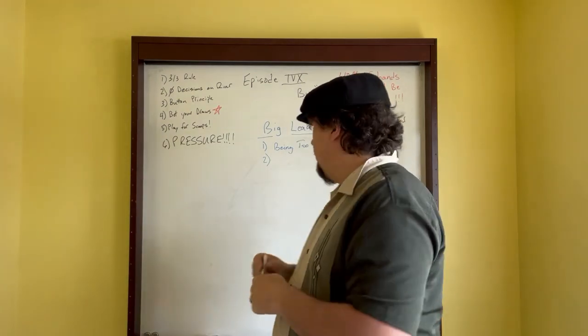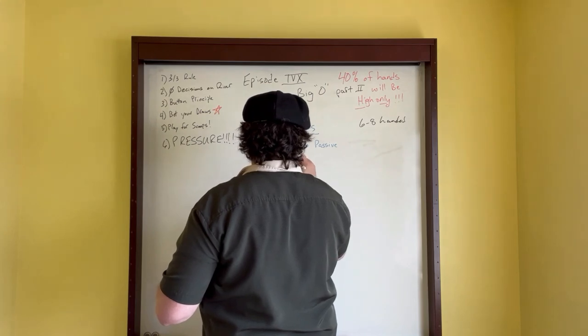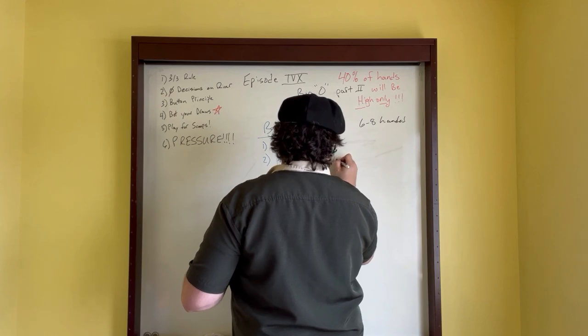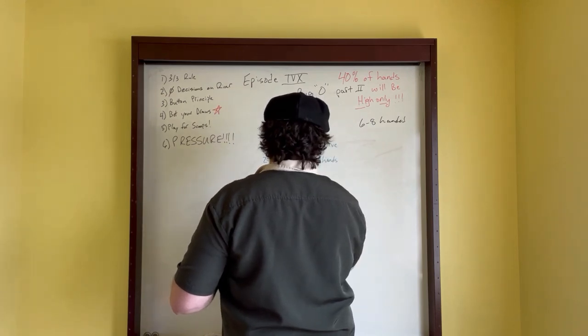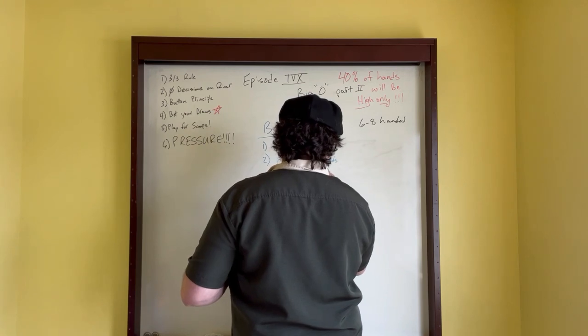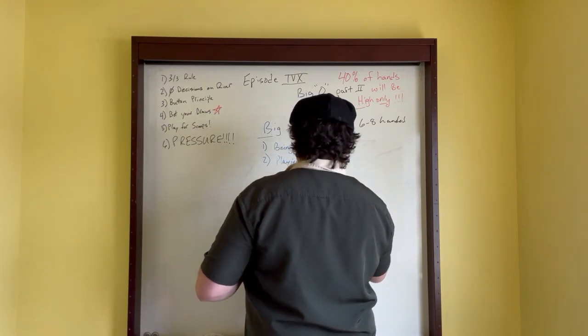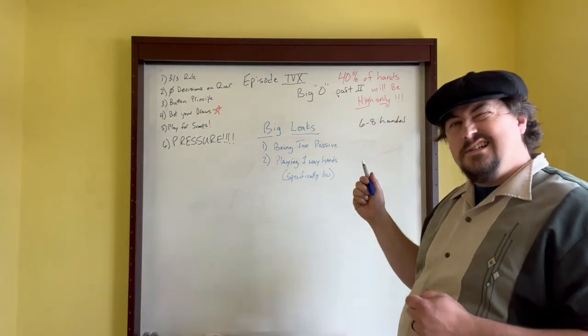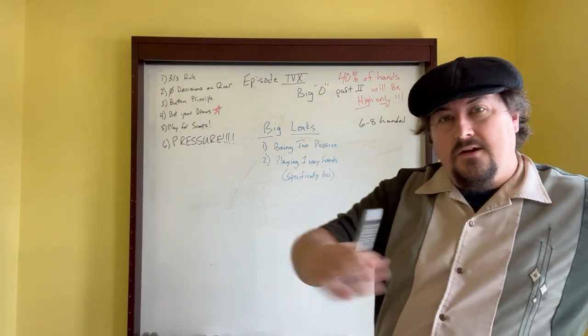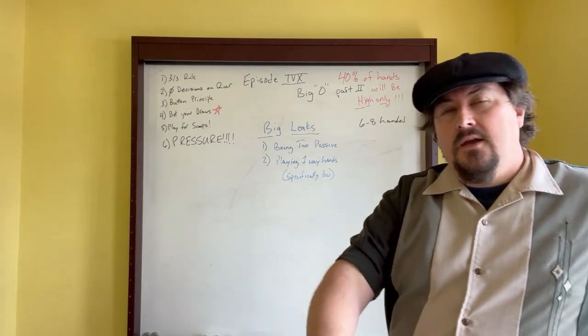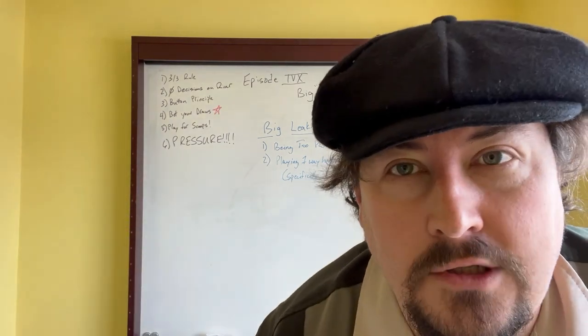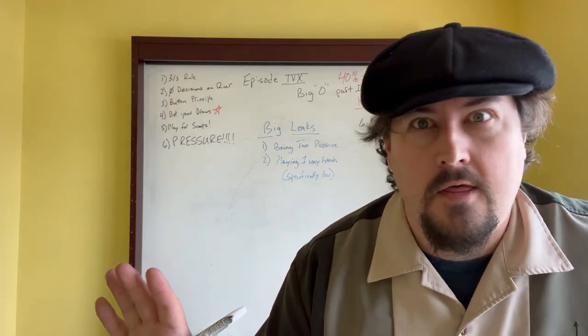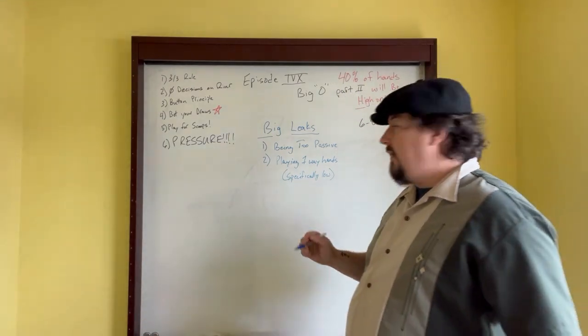Now the other leak: playing one-way hands. When I say that, I mean specifically low. These are the type of hands where you look at it and initially it looks really good, but in reality, when you figure out 40% of the time you're just never going to have a low, think about that for a second. 40% of the time there's going to be no low.